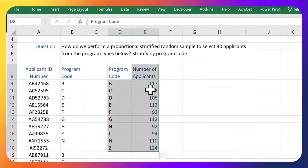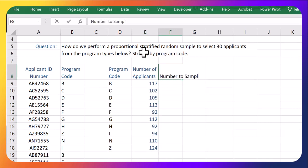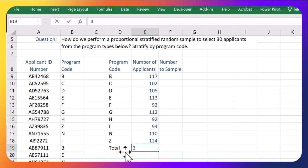So let's say we now have this number of applicants in each of these program codes. Let's say we want 30 applicants total. So let's figure out how many of each group to sample. So easiest is to do this. Let's sum up how many applicants there are total. So we're going to do equals SUM and we're going to total up all of these applicants. So we have 1,061 of them.